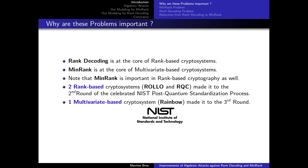So why are these problems important? First, rank decoding is at the core of rank-based cryptosystems, and min rank is at the core of multivariate-based cryptosystems. Note also that min rank is important in rank-based cryptography as well, because of some reductions I will mention later. Moreover, two rank-based cryptosystems, ROLO and RQC, made it to the second round of the celebrated NIST post-quantum standardization process, and one multivariate-based cryptosystem, Rainbow, made it to the third round.